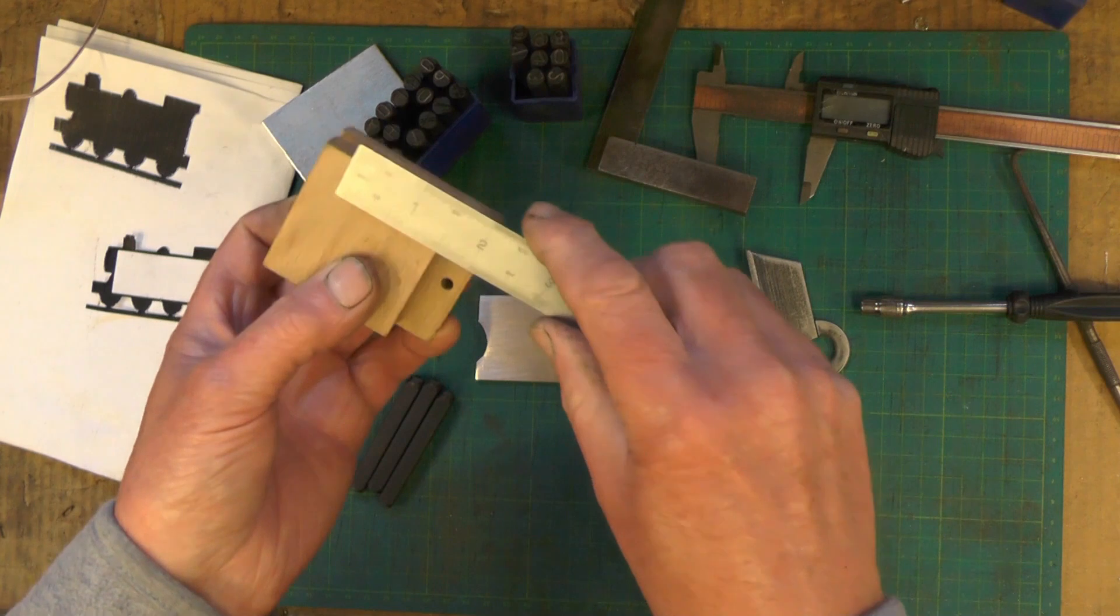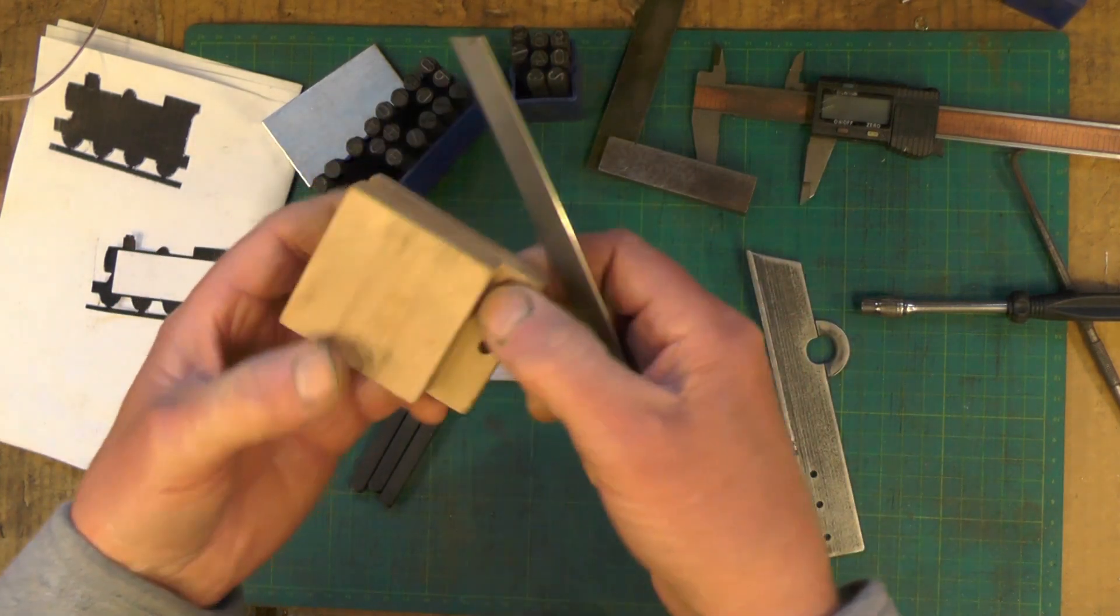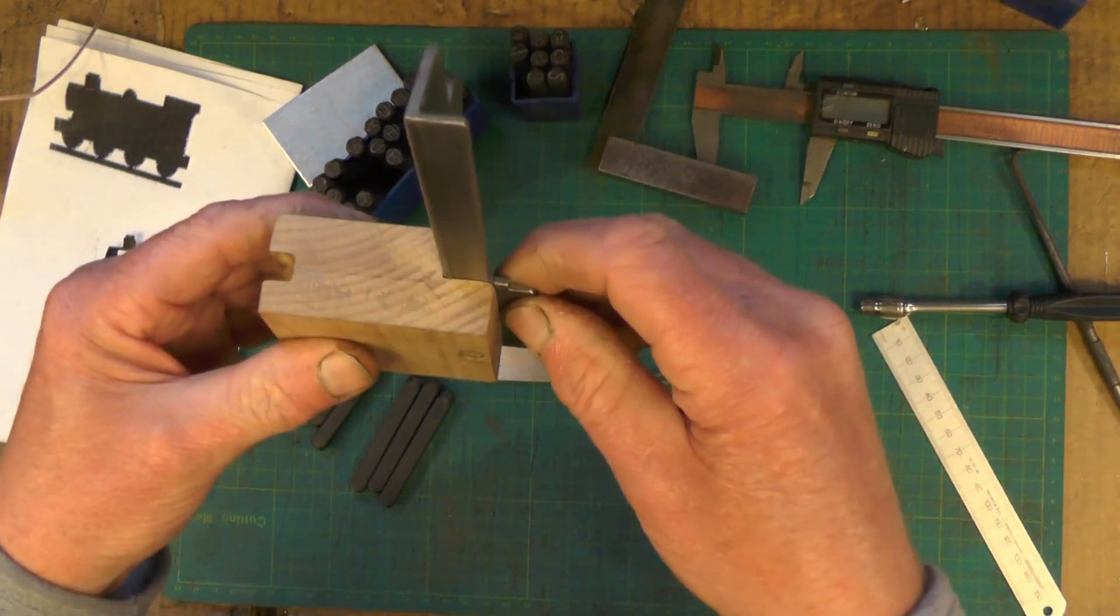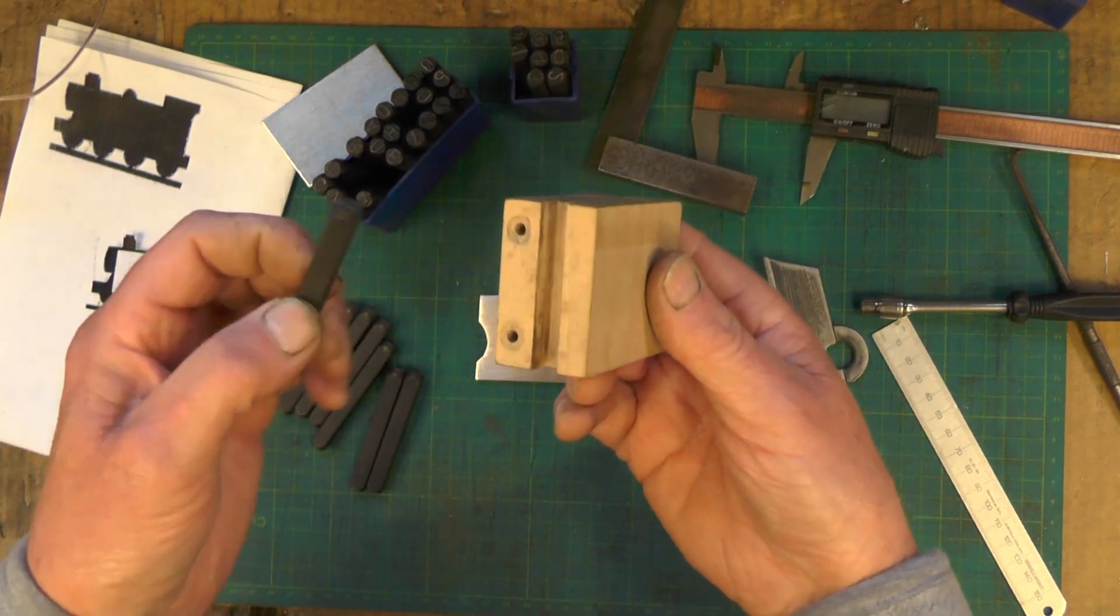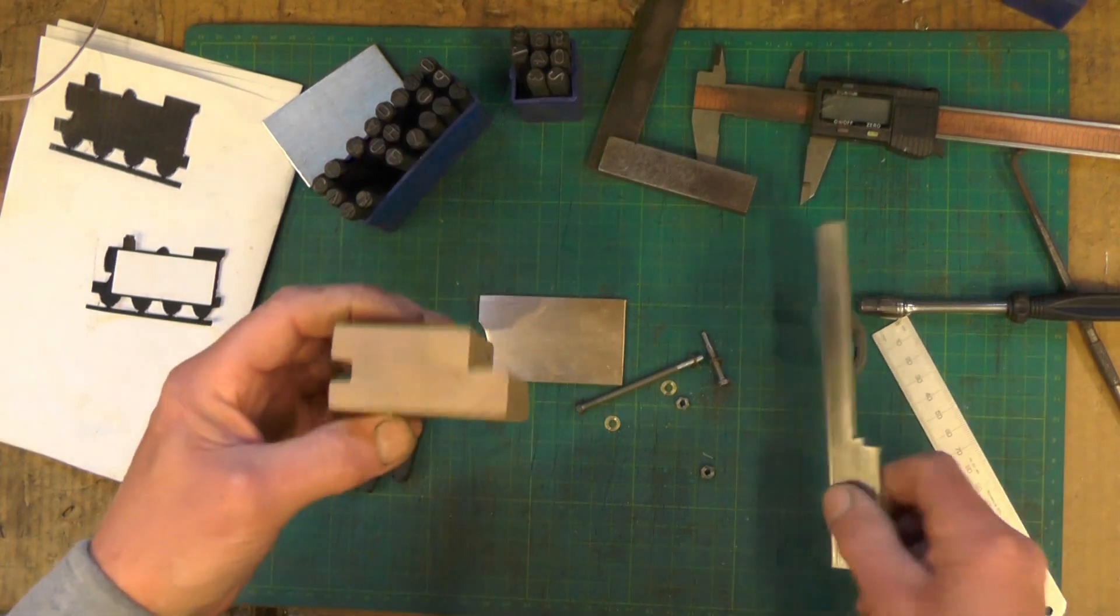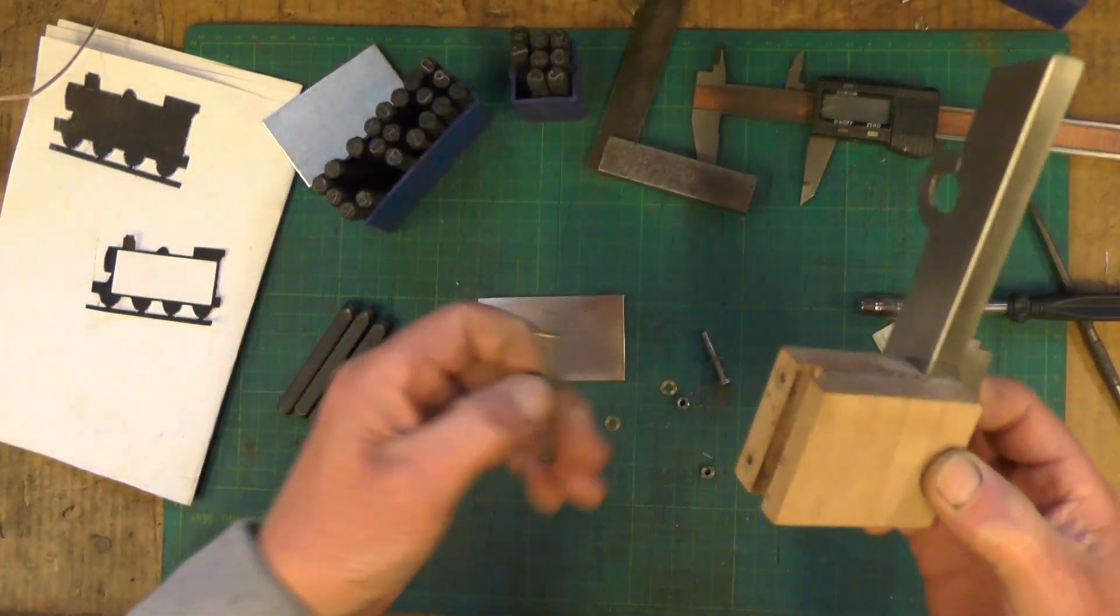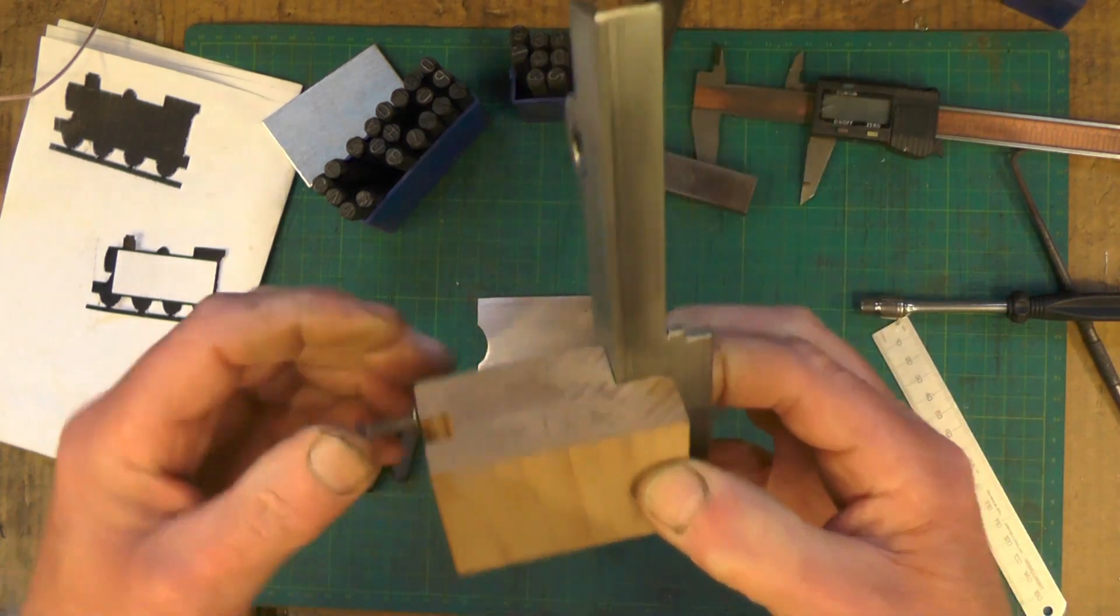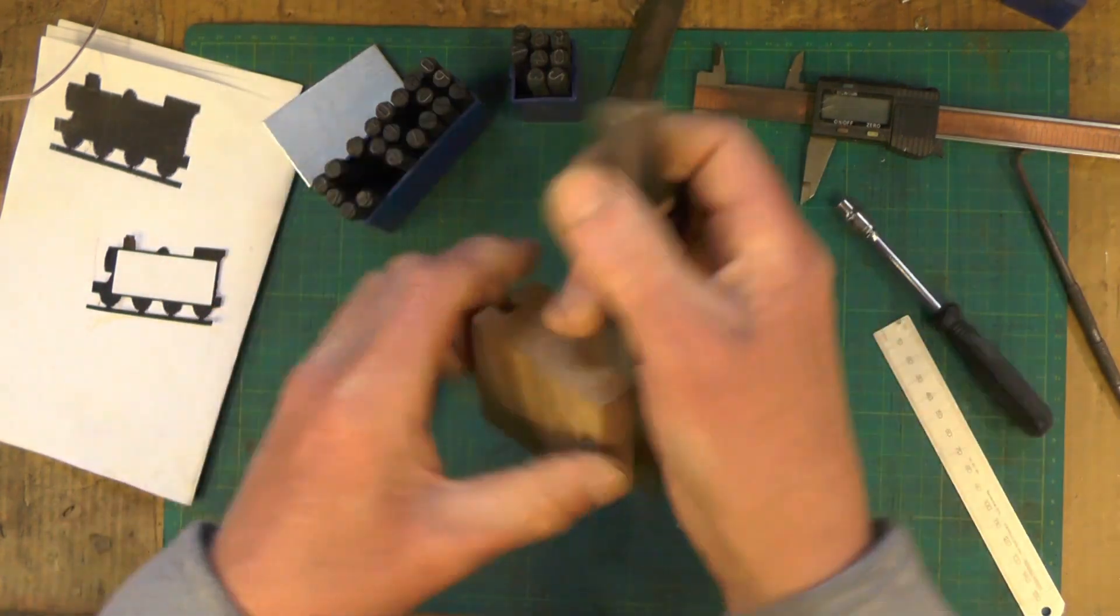2 inch by 2.5 by 1.25. I've milled a recess in it to fit on this angle, and then on the other end I've milled a slot in it to take whichever size number stamp you're using.